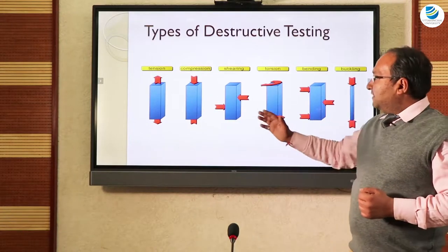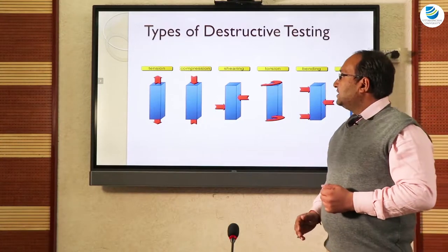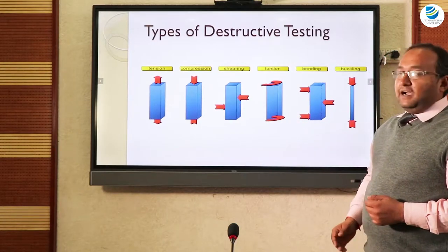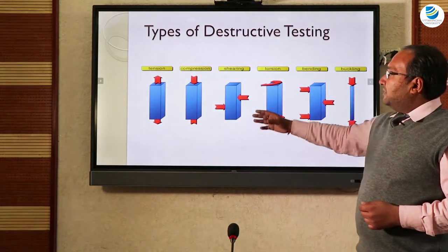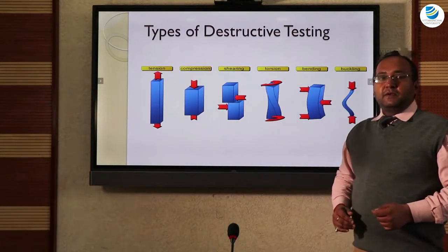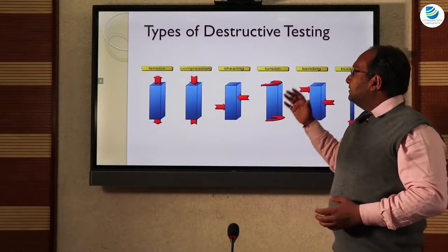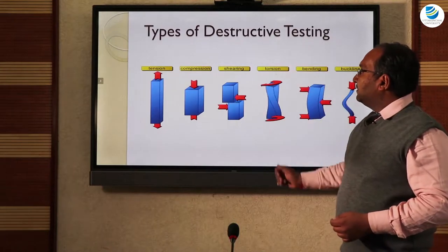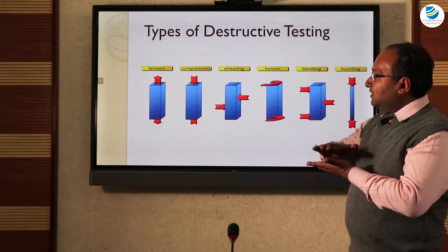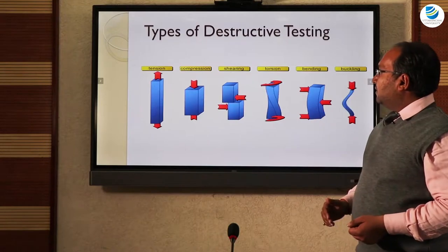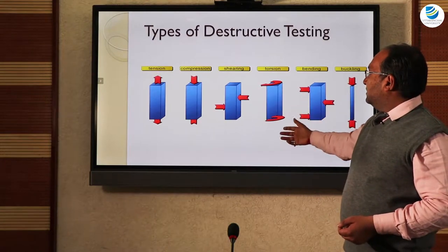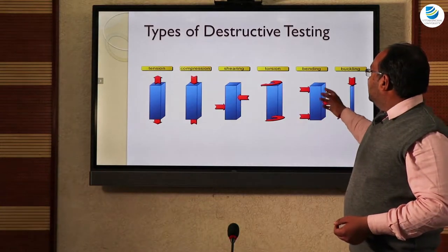There are different kinds of loads that can be applied to a material. The first is tension, in which the load is applied along the longitudinal axis in a manner that pulls the material, causing it to elongate and eventually break. The second is compression, where the load along the longitudinal axis compresses and shortens the material. Then there is shearing, where the material tends to break over a particular plane, and torsion, which involves twisting of the material.